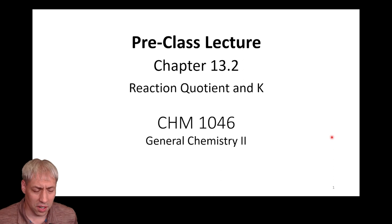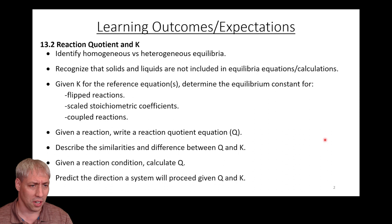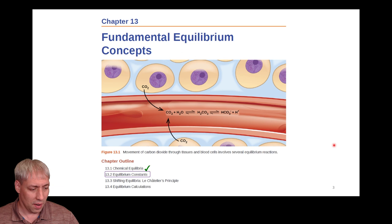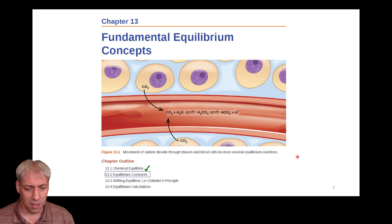Continuing our journey in chapter 13, we're moving on to section 13.2, and now we're going to dive into equilibrium constants. There are a few rules and qualifiers we have to be aware of: the phase of the reaction matters, there are ways to mathematically manipulate K, and we're also going to talk about what if it's not at equilibrium — how do we figure out how it's going to shift to reach that equilibrium condition with a reaction quotient?